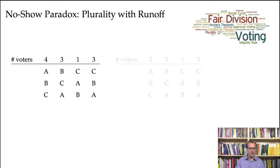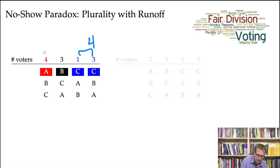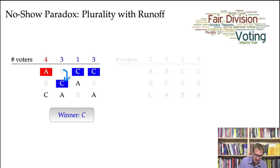Let's look at an example of the no-show paradox with plurality with runoff. In our election scenario, candidate C gets four first-place votes, candidate A gets four first-place votes, but candidate B only gets three. Nobody gets a simple majority among 11 voters total. Candidate B is dropped from the first round for having the fewest first-place votes. B's votes transfer to candidate C, and C wins seven to four. So C is declared the winner.